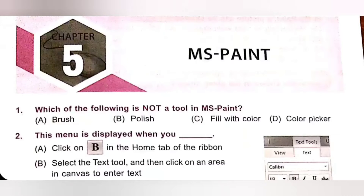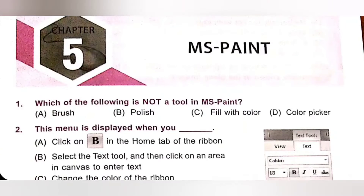Question 1: Which of the following is not a tool in MS Paint? A. Brush, B. Polish, C. Fill with Color, D. Color Picker. Polish is not a tool in MS Paint. So Option B is the correct answer.